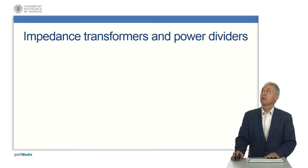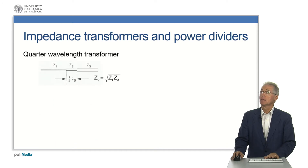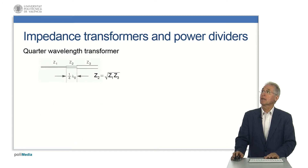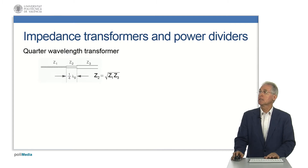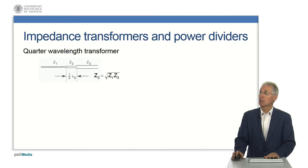Impedance transformers and power dividers are key components in the feed network of an array, especially if it has many elements. A quarter-wavelength transformer — the name stems from the length of each section, which is a quarter of the effective wavelength — provides perfect impedance transformation if its characteristic impedance is the square root of the terminal impedances. It is very narrowband, except if several sections are used.